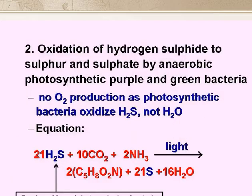Secondly, the sulphides so produced are oxidised to sulphur, and sometimes eventually to thiosulfates and sulphates, by anaerobic photosynthetic green and purple bacteria.